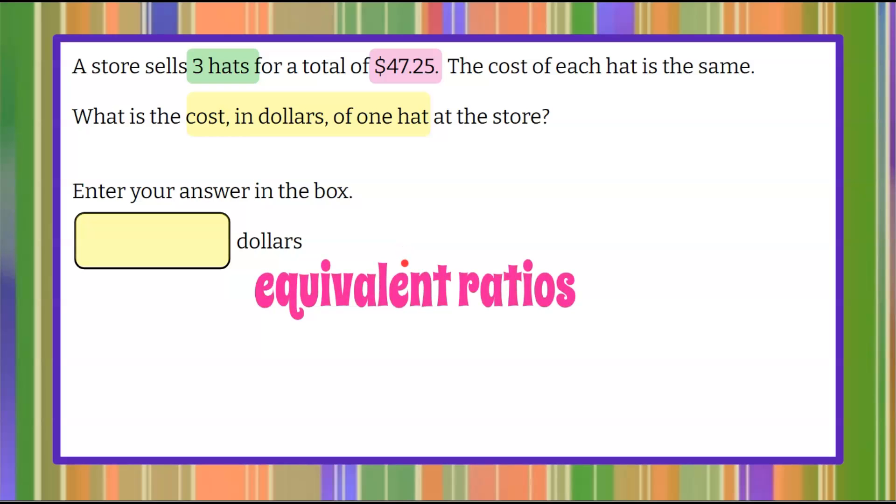Let's use the idea of equivalent ratios to determine the cost for one, which is our unit rate. So we're going to use the ratio that we were given, and we're going to determine it's equal to a different ratio.